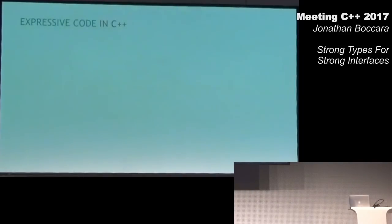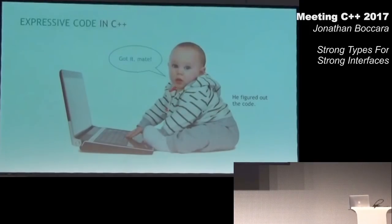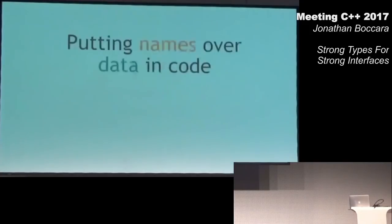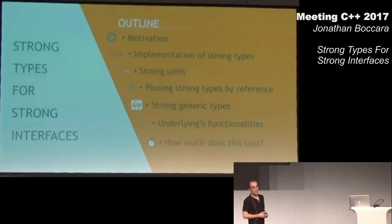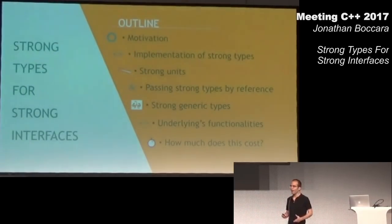Expressive code is code that pretty much anyone can understand. One way to go about that is putting names over things — putting eloquent names. Today, we're going to see a way to put names over data, in particular in code. And we're going to do that with strong types. You can use this in your code to make it more expressive. The journey I'll be proposing starts with a motivating example that will get us to what strong types are and how they can be useful, and then we'll see a generic implementation of strong types.